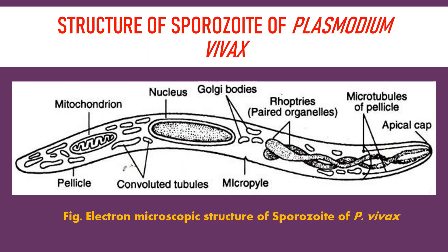In this lecture, we will discuss the structure of the sporozoite of Plasmodium vivax. Plasmodium vivax is a protozoan parasite responsible for causing malaria in humans. This Plasmodium lives in the liver cells and the RBCs of humans, and in the salivary gland of the female Anopheles mosquito. The female Anopheles mosquito acts as a vector of Plasmodium, transporting it from one person to another.